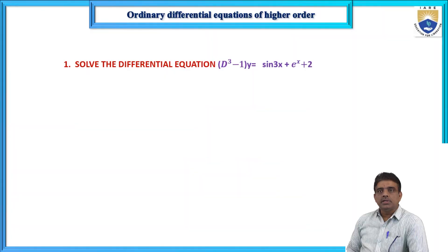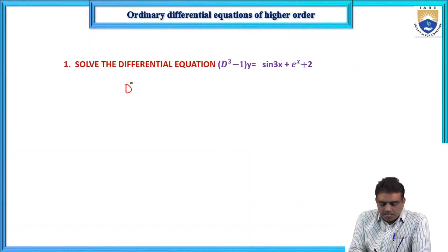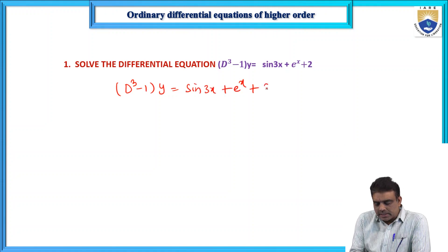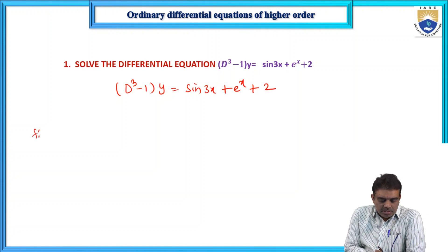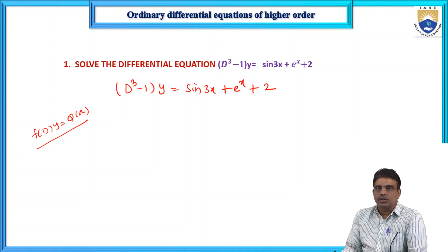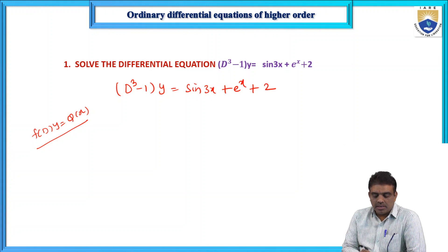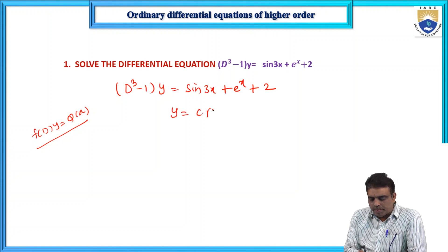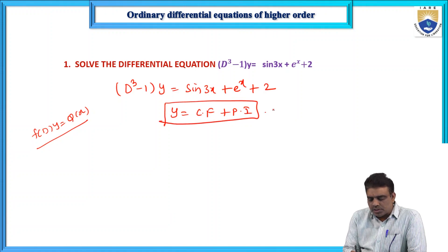See the problems: solve the differential equation (D³ - 1)y = sin3x + eˣ + 2. Clearly the equation is in the form f(D)y = Q(x) and it is a third order differential equation because it contains the D³y/dx³ term. To find the solution we need to calculate both the complementary function as well as the particular integral. The addition of the two solutions is the general solution.